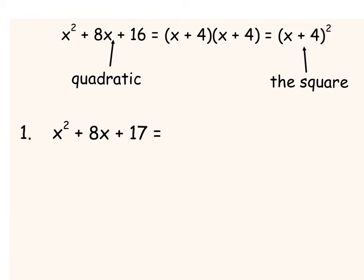If we look at the quadratic X² + 8X + 16, when you factorise that it goes into two brackets: (X + 4)(X + 4), because 4 and 4 multiply to 16 and add to 8. A shorter way of writing that repeated bracket is (X + 4)², because anything times itself is squared. So we have completed the square on that trinomial.